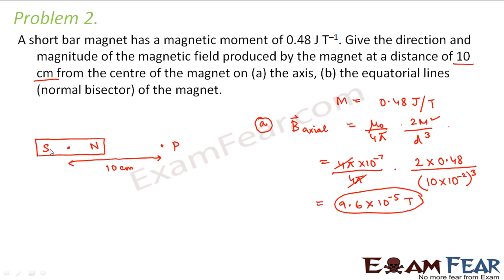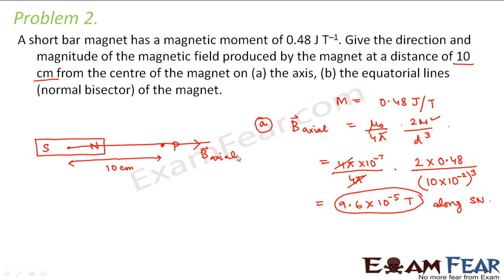As for the direction of the axial magnetic field: inside the magnet, field lines go from south to north pole. At point P on the axis, the magnetic field will be along the south-to-north direction. Even outside the magnet, field lines always originate from the north pole, so B_axial is directed from south to north along the SN direction.